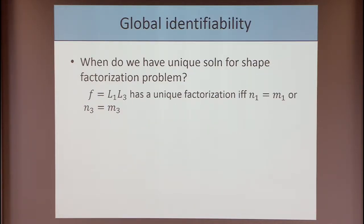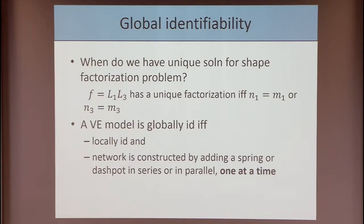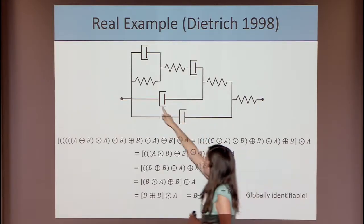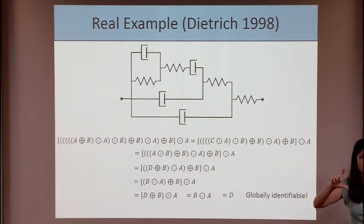For global identifiability, we ask when there is a unique solution to the shape factorization problem. This happens when F has a unique factorization, which occurs precisely when the highest differential order equals the lowest differential order in either L1 or L3 — in other words, you just have a single term. That happens only when you're adding a spring or a dashpot exactly one at a time. Going back to our model, it's not only locally identifiable but also globally identifiable, because each spring and dashpot is added precisely one at a time. An example of something locally but not globally identifiable would be two Voigt elements (spring and dashpot in parallel) combined in series — you could generically exchange them.